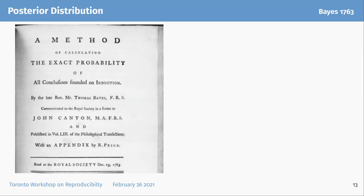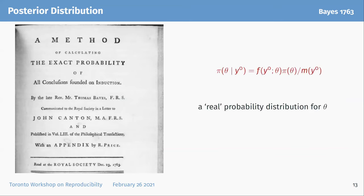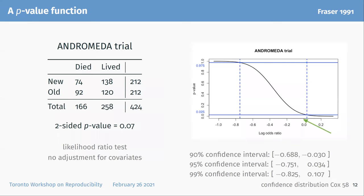A p-value function is not a posterior distribution because we didn't put a prior in, but it has an intuition similar to a posterior distribution — in fact, it's really like a fiducial distribution. If you like your foundations and know what fiducial is, why not just use that? Then we'd have a real probability distribution: the data would be fixed and the probability comes from pi of theta. That is another possibility. In this setting, we would have to put a prior on the log odds ratio — or on the survival rate under the two groups. Maybe there's enough collected data on the problem by now to do that, but without it, it would be rather difficult.